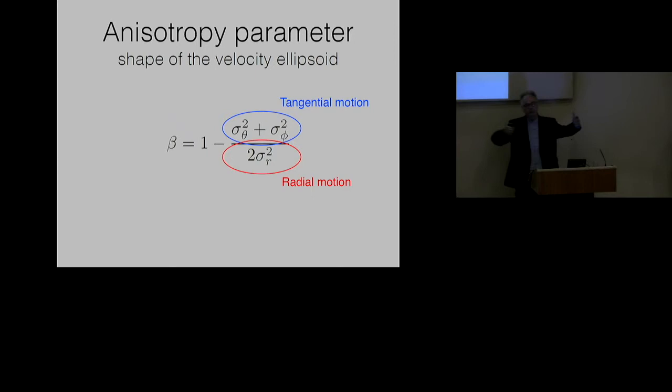If the stars are isotropic, they're moving every which way, then sigma theta squared plus sigma phi squared will be equal to sigma r squared, and beta will be 1 minus 1, it will be 0. Whereas if the stars are mainly moving on eccentric orbits, then beta will be larger than 0, and if they're mainly moving on tangential or circular orbits, then beta will be less than 0.